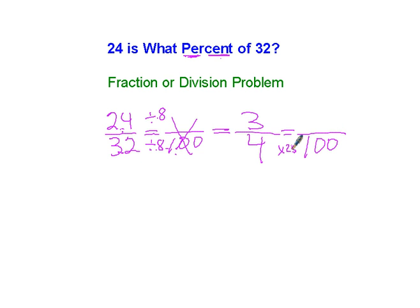4 times 25 is 100. 3 times 25 is 75. 75 out of 100 is the same thing as 75%.